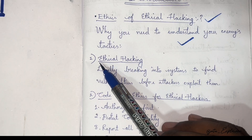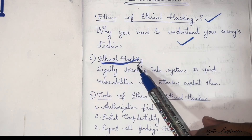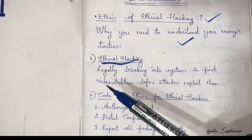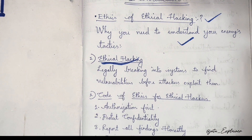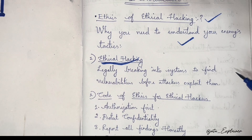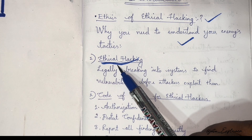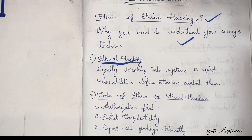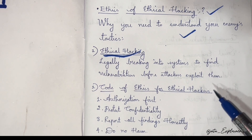Before starting, let's understand what is meant by ethical hacking. Ethical hacking means legally breaking into systems to find vulnerabilities before attackers exploit them. For example, if a person unauthorizedly enters or breaks into your PC, that person is an attacker. But if a person legally enters your PC with your permission, that is called an ethical hacker.